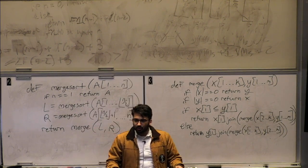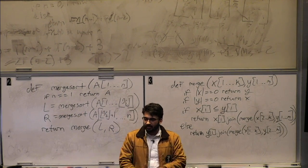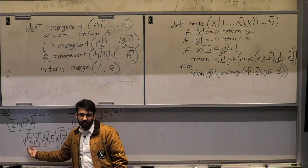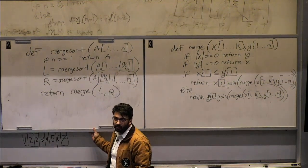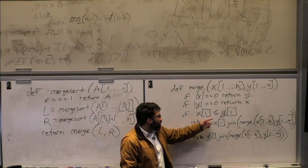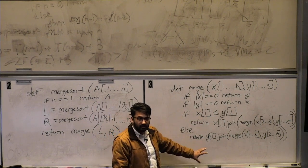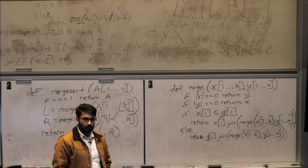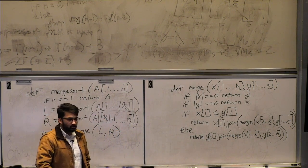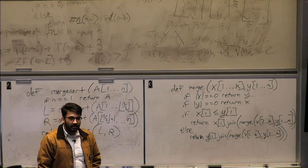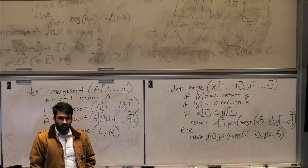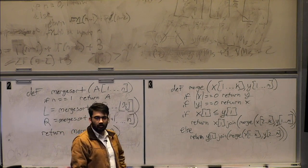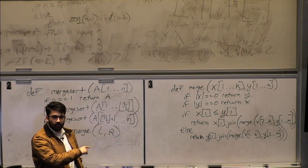If x1 is less than or equal to y1, we return x1 concatenated with Merge(x2..xk, y1..ym). We removed the first element of X, which is still sorted. Recursively, Merge handles the rest. Otherwise, we return y1 concatenated with Merge(x1..xk, y2..ym). For equal elements it doesn't matter which you pick first — the decision is arbitrary since swapping them doesn't change sortedness.